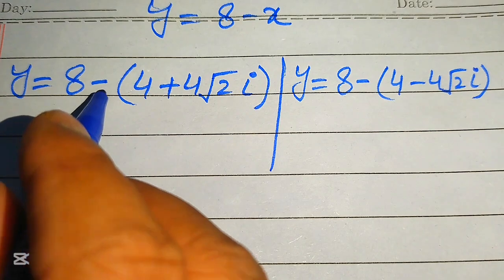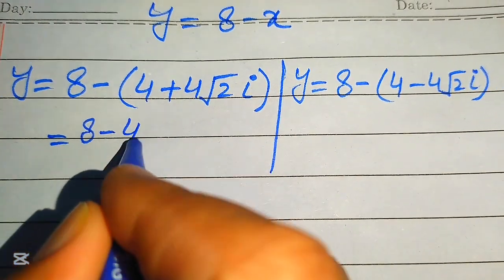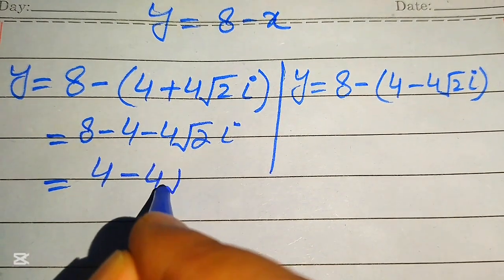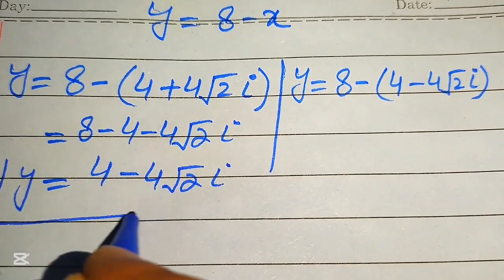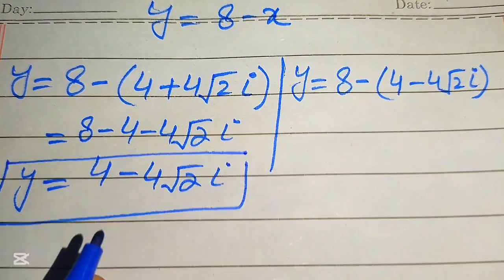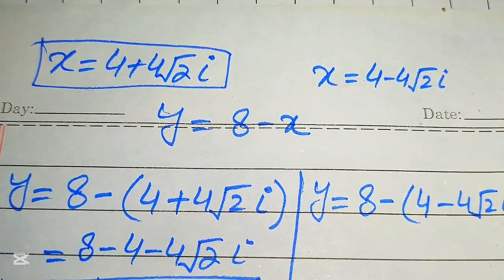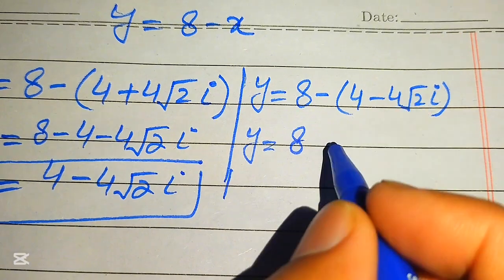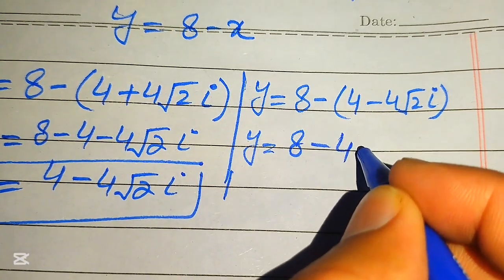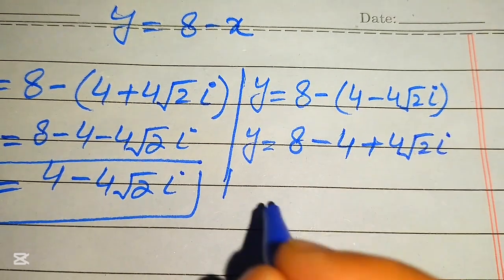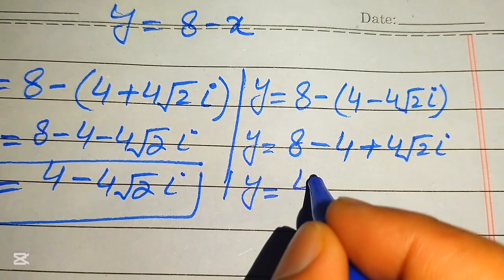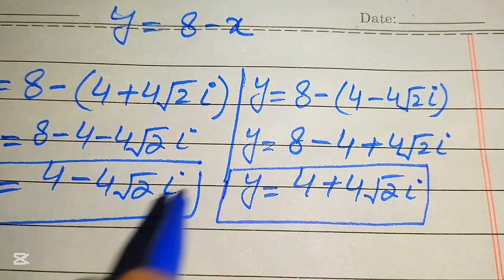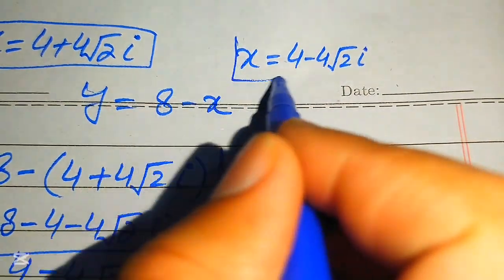We simplify by multiplying the negative sign on each value. For the first x: 8 minus (4 plus 4√2 iota) gives 4 minus 4√2 iota, which is the value of y corresponding to the first x. For the second x: 8 minus (4 minus 4√2 iota) gives 4 plus 4√2 iota, which is the value of y corresponding to the second x.